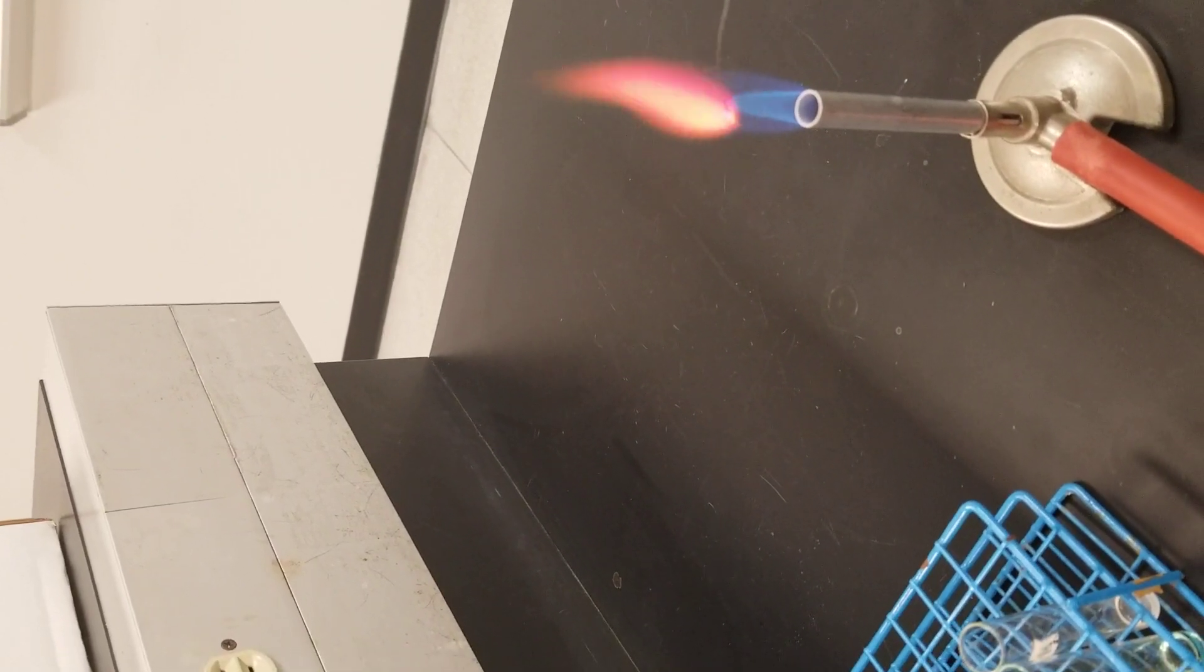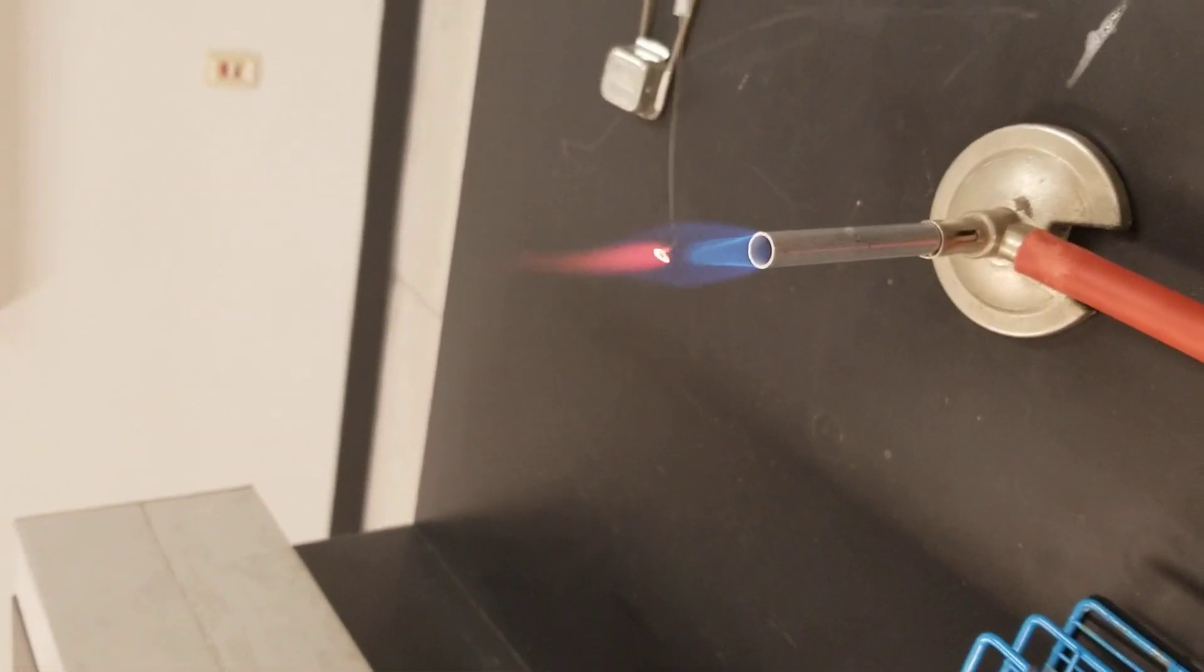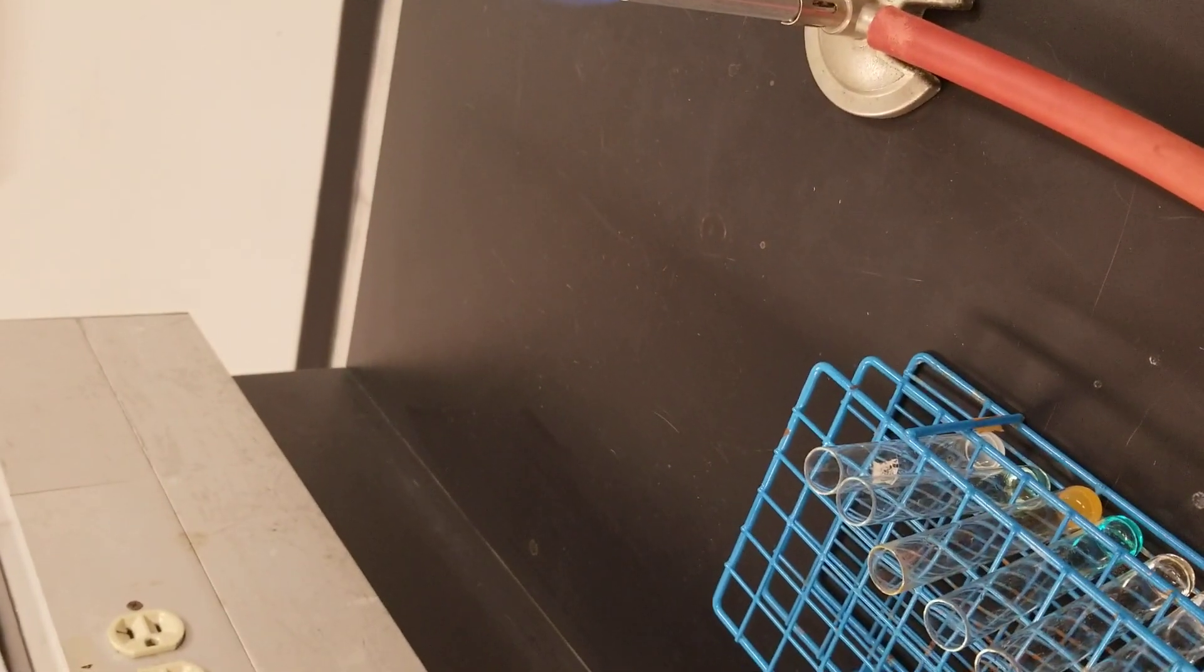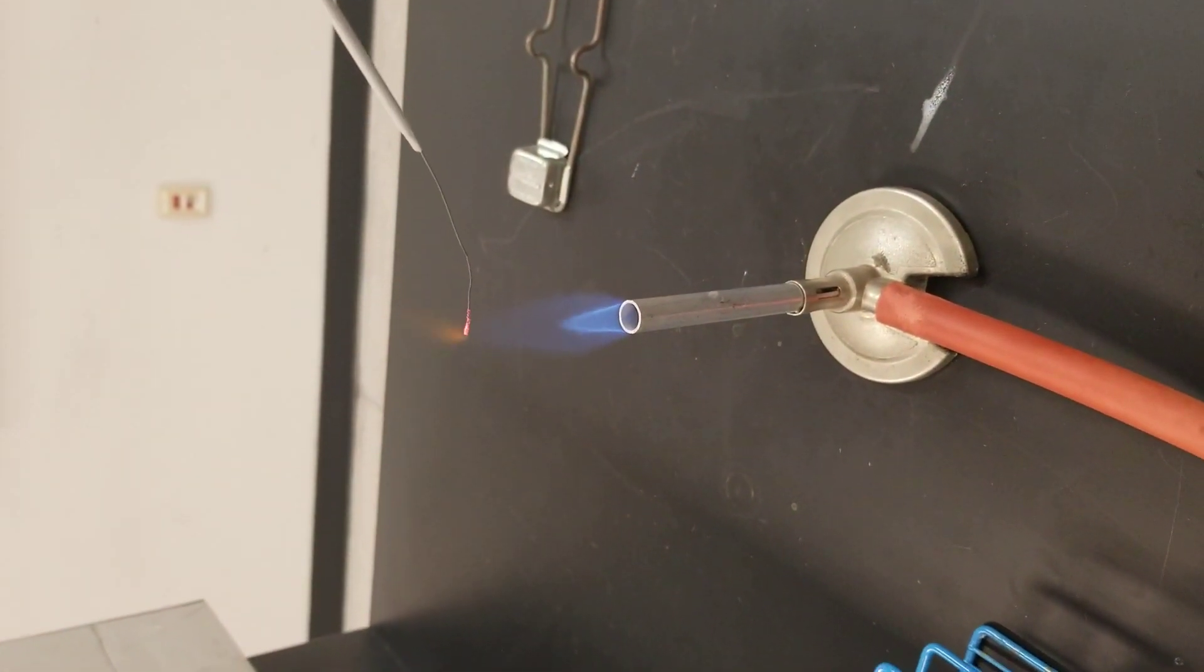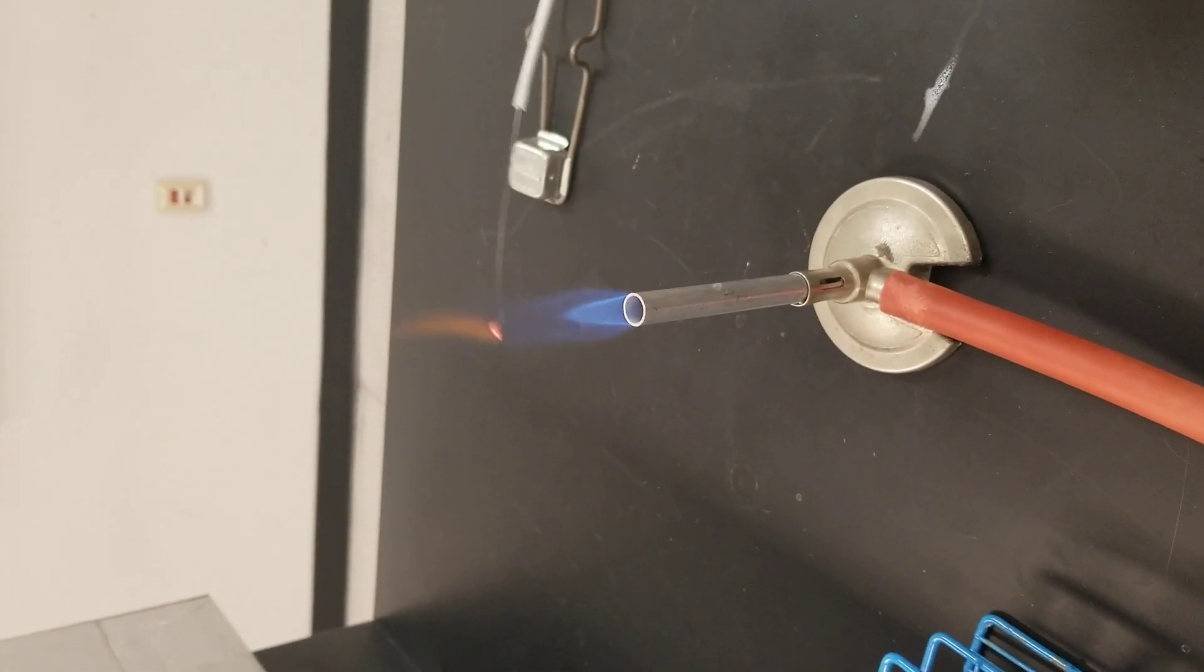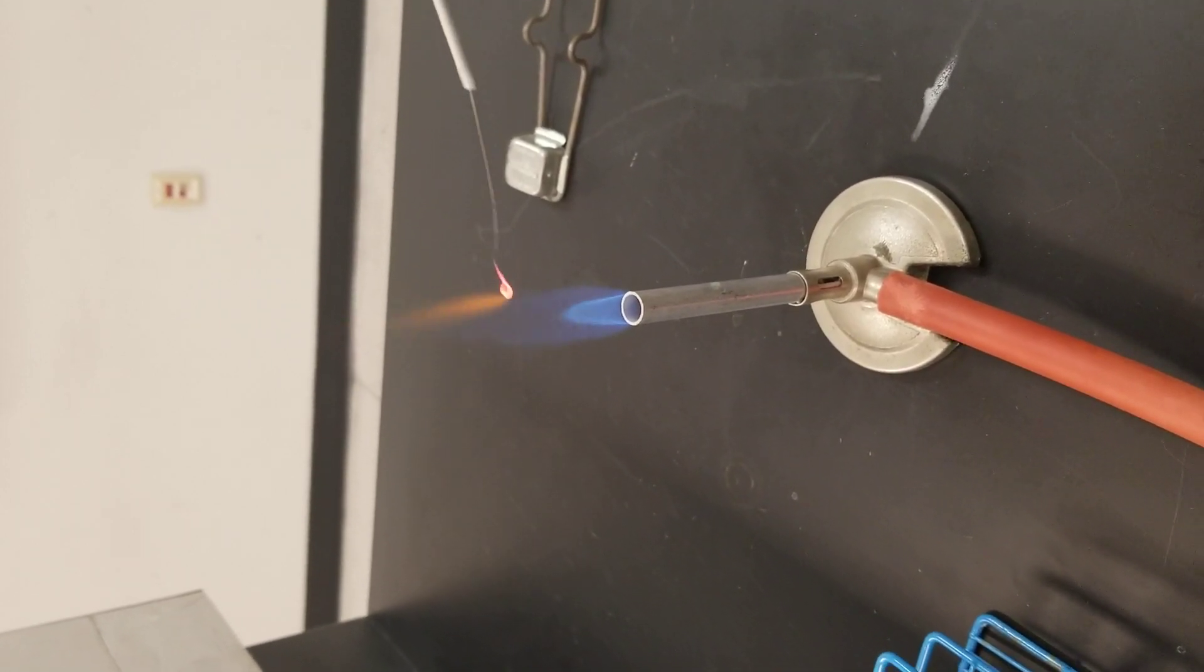Right now it looks like this is not clean. That's why I have to dip it into the nitric acid solution. This one is the nitric acid. Now the flame test wire is clean.